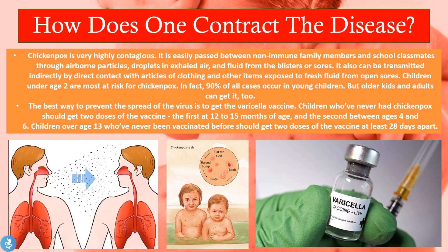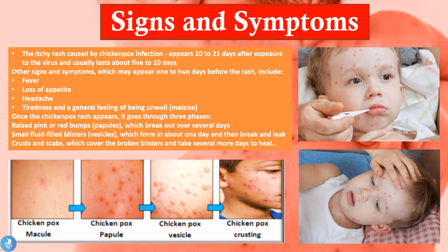Now let's take a closer look at some signs and symptoms of this disease. The itchy rash is the most prominent symptom caused by the chicken pox infection and it appears 10 to 21 days after the initial exposure to the virus. It takes about 10 to 21 days for the patient to develop the rash after their initial exposure to either those airborne droplets or direct contact from oozing vesicle fluids.